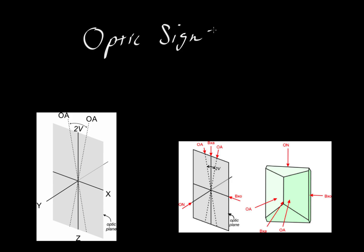In this video, we're going to define optic sign. If you look up a mineral in a book, you might see something like orthorhombic with a positive sign, or monoclinic with a negative sign. They're indicating the crystal system, but also whether the mineral is positive or negative. So what do they mean by this?